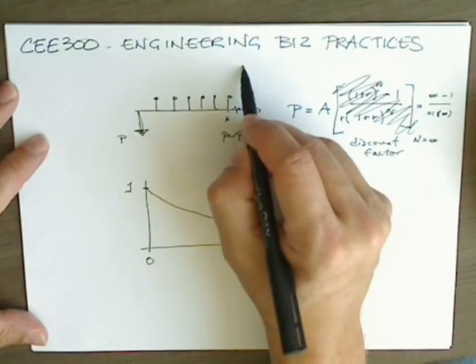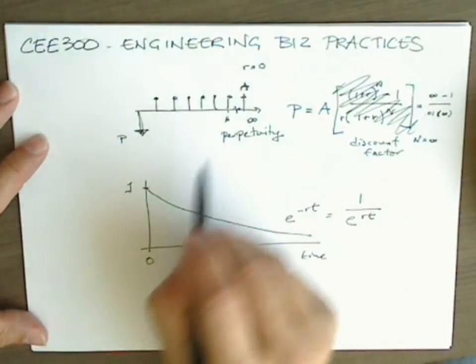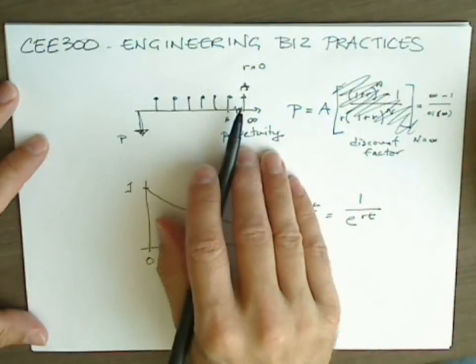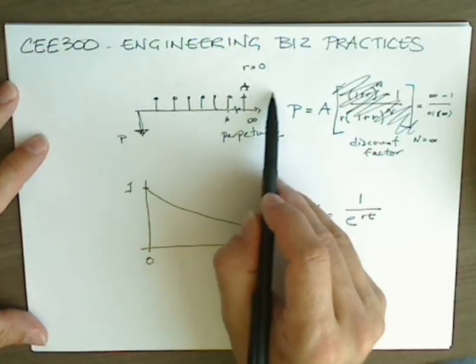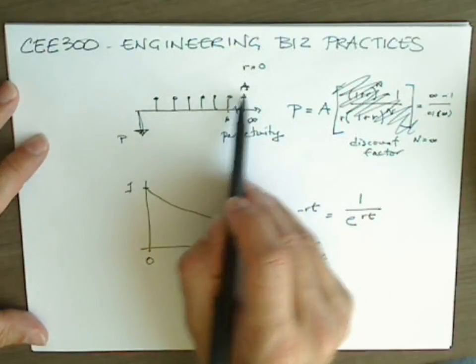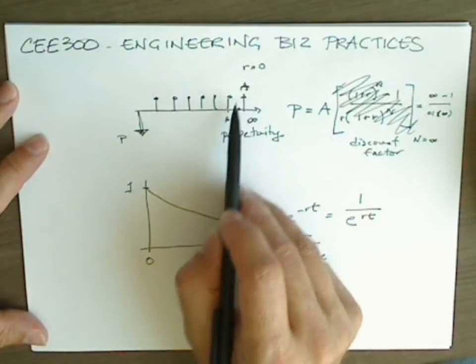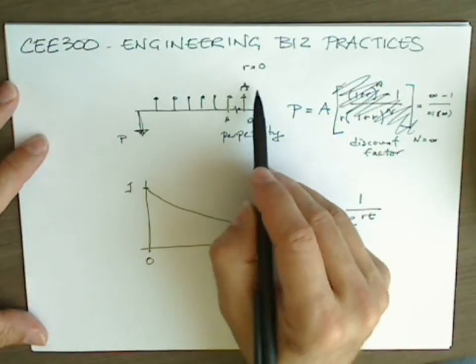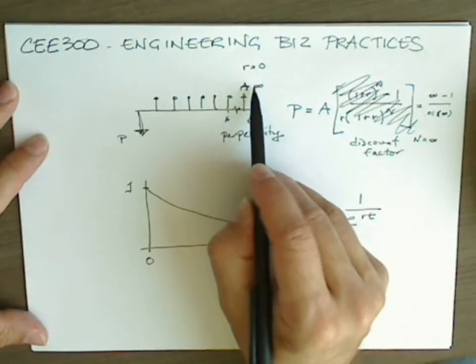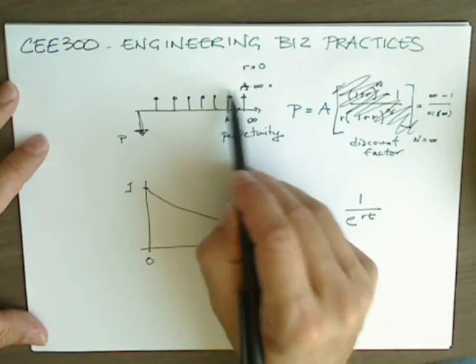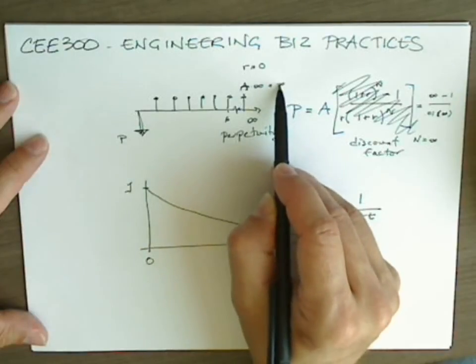It should seem clear that if r equals 0 and there's no discounting, then the net present value of this infinite series of payments equal to A is going to be the amount of each payment, A, times the number of payments, which is infinite. And so the present value here would be infinity.